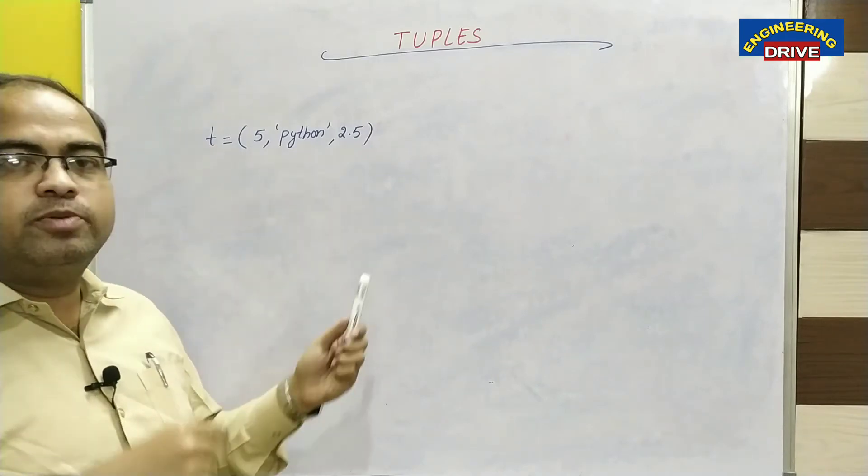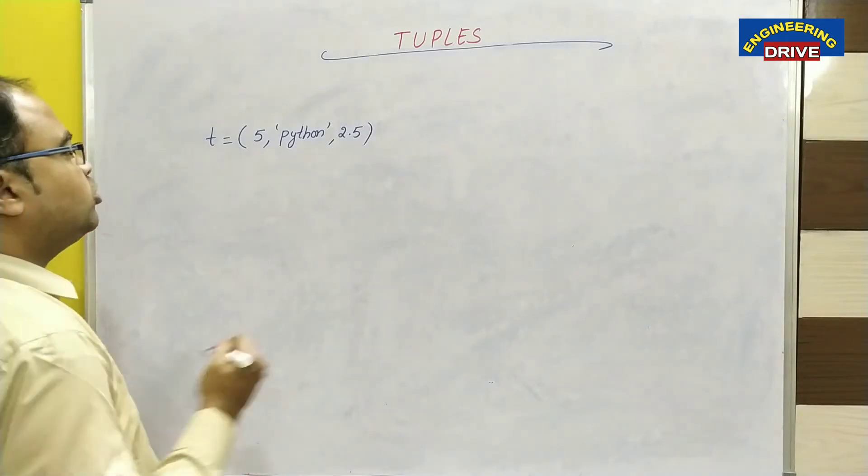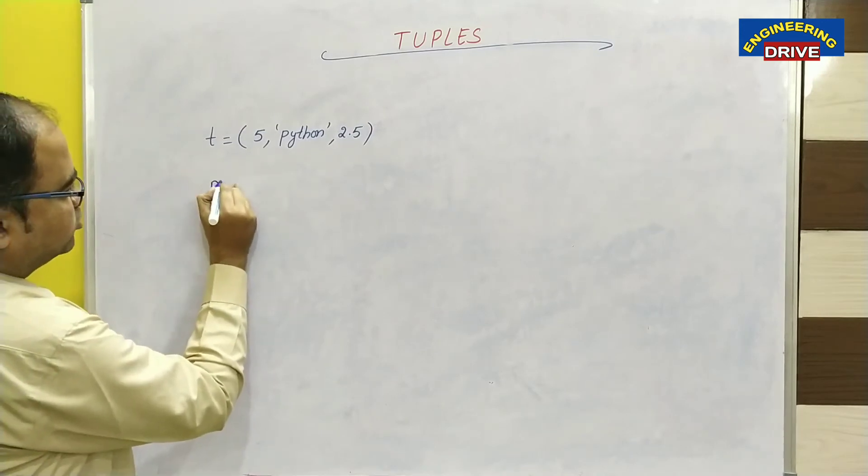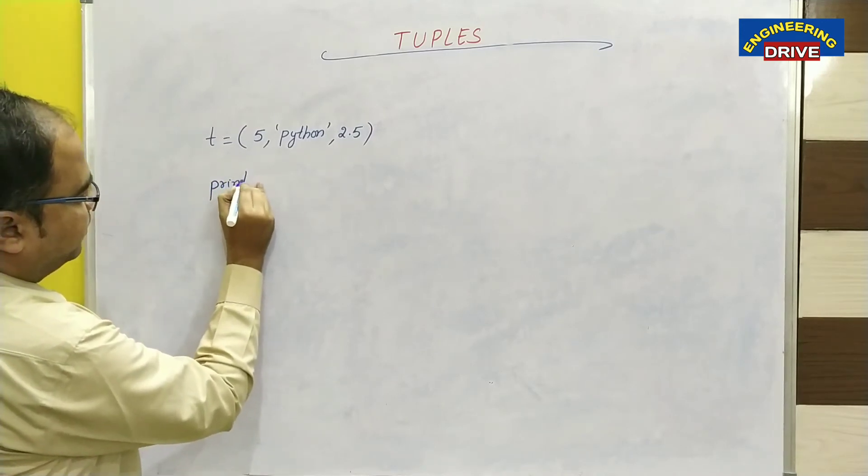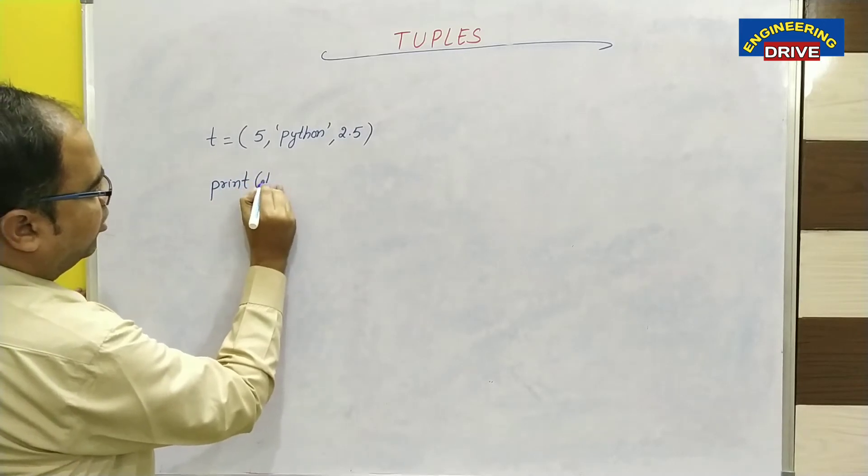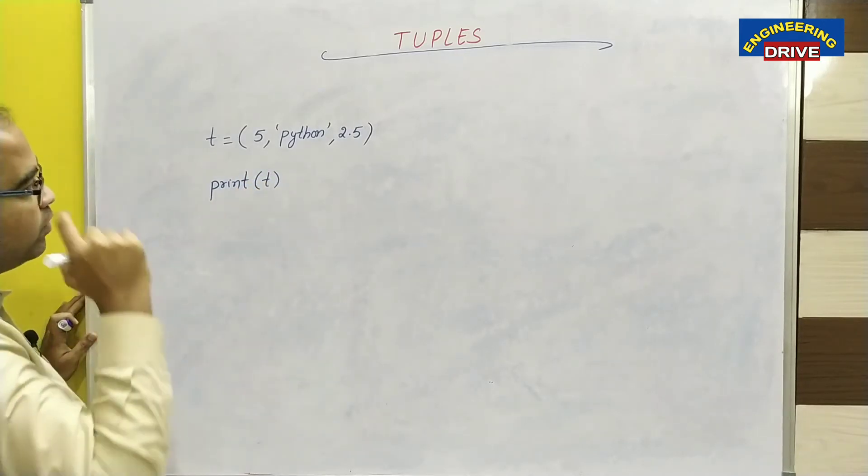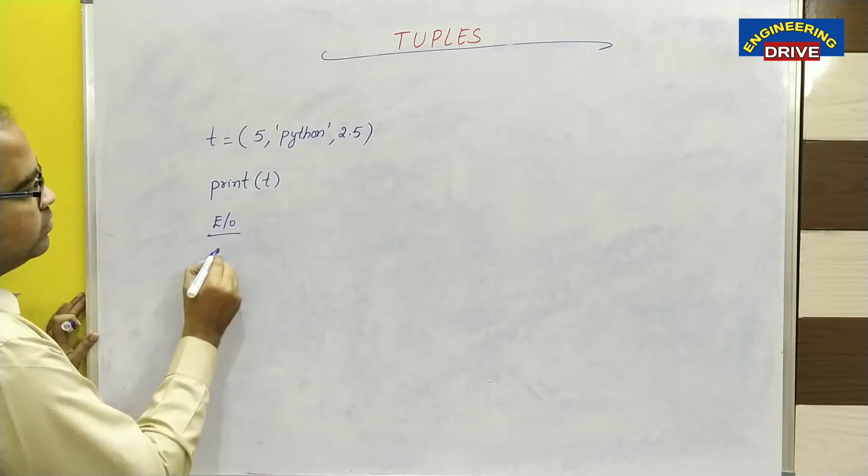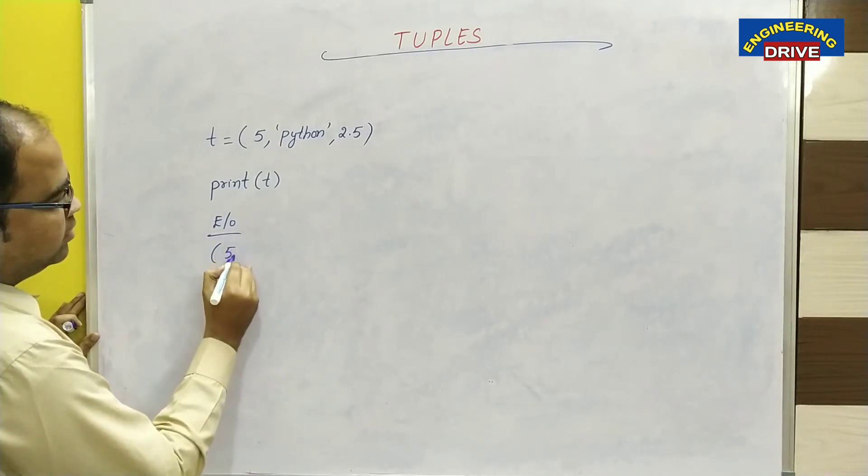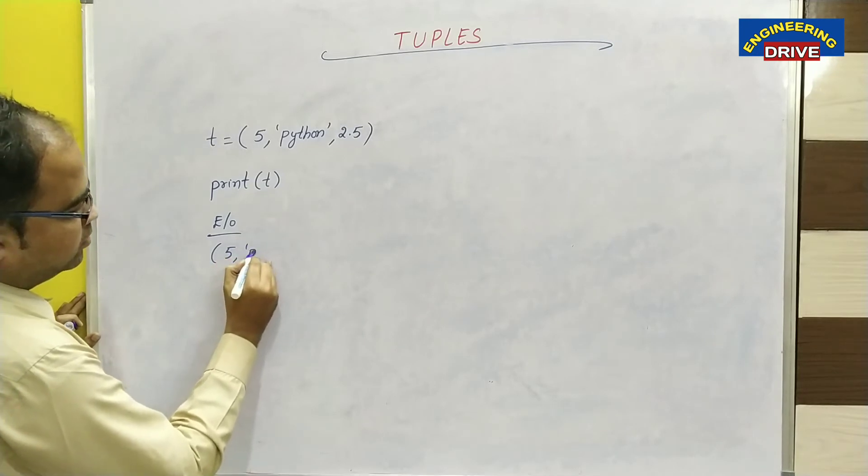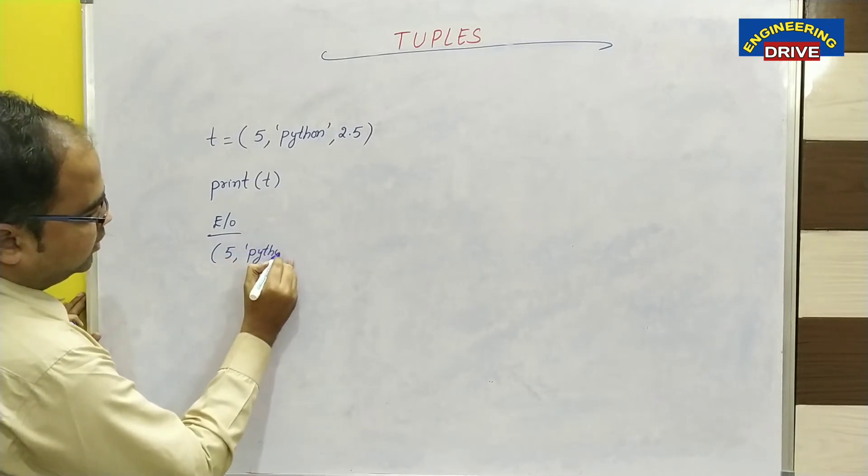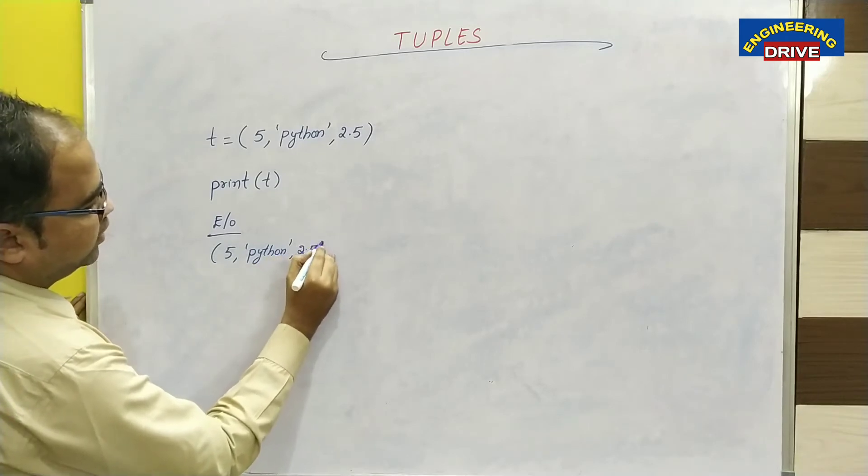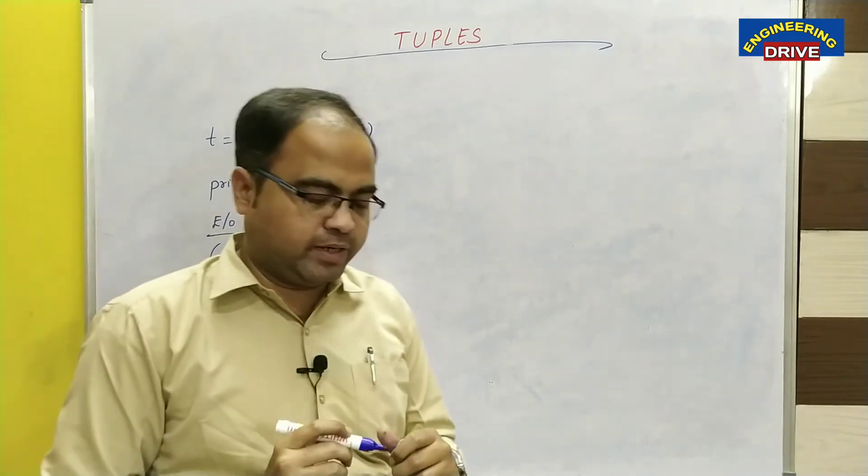Now I want to display this tuple on the screen. In order to display this entire tuple, what I am going to do? I can make use of the function print of t. So what I will get as the expected output when we execute this program, the expected output will be the tuple that is 5, comma, python, comma, 2.5. This is the expected output, tuple can be displayed.